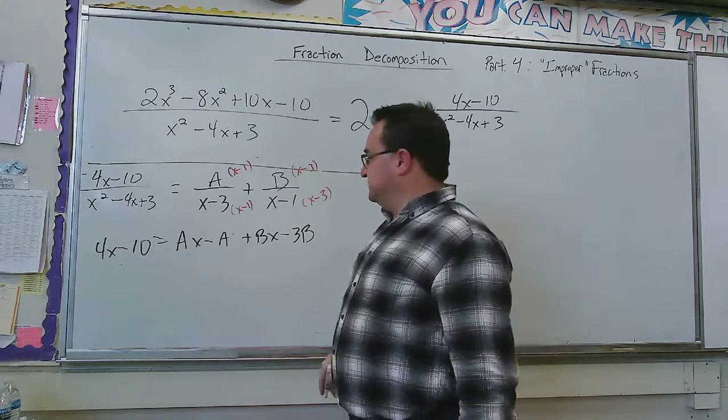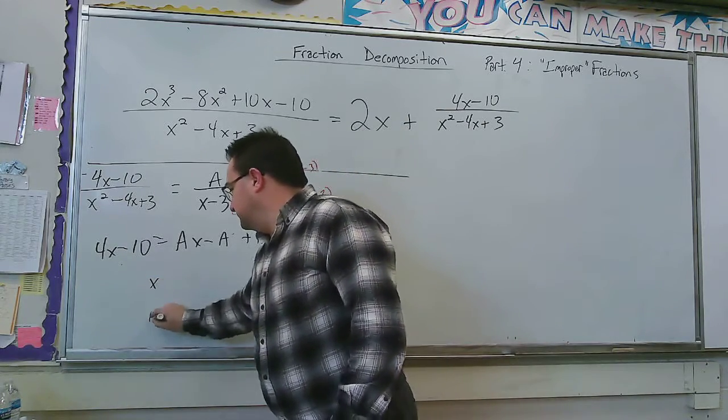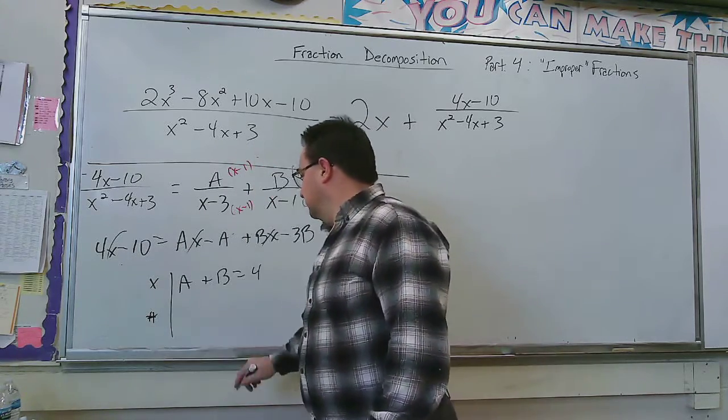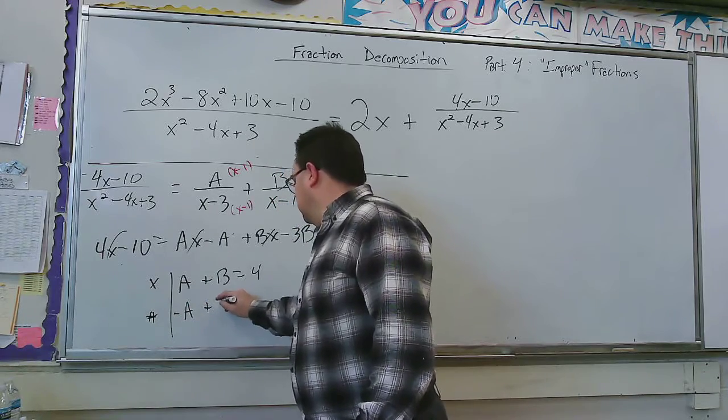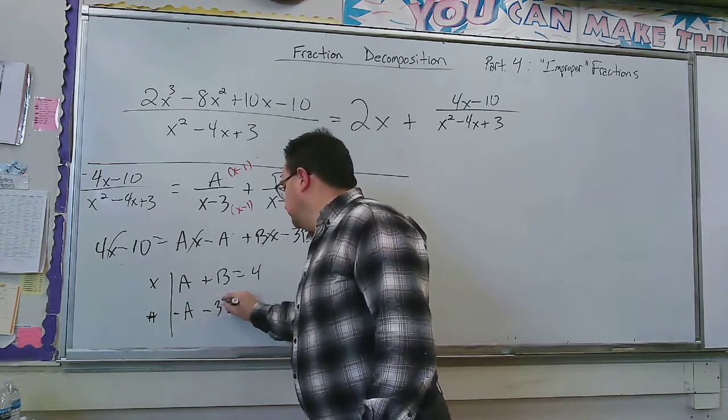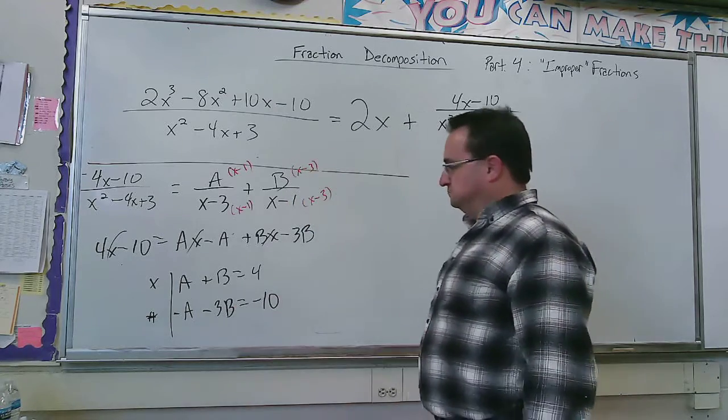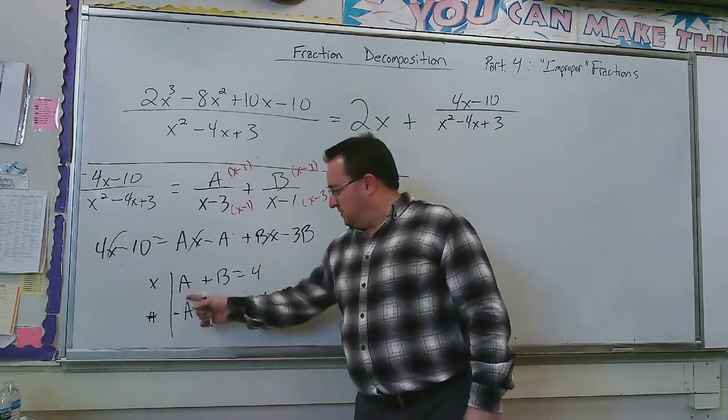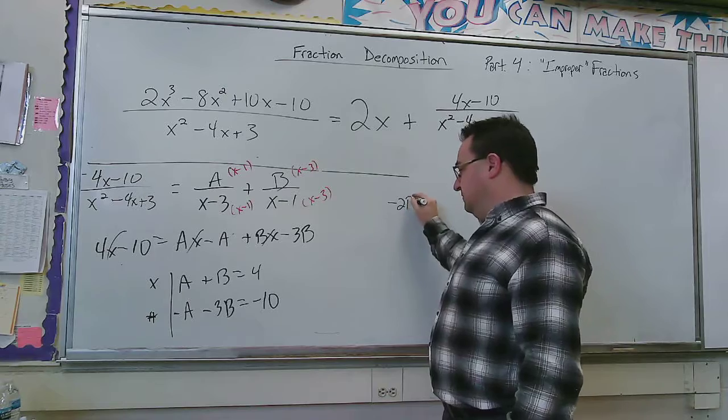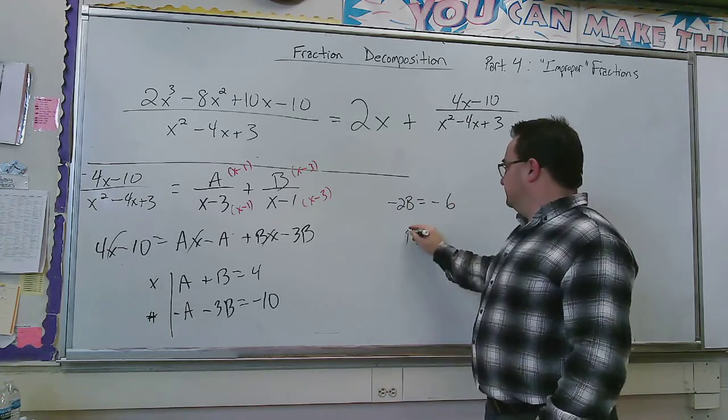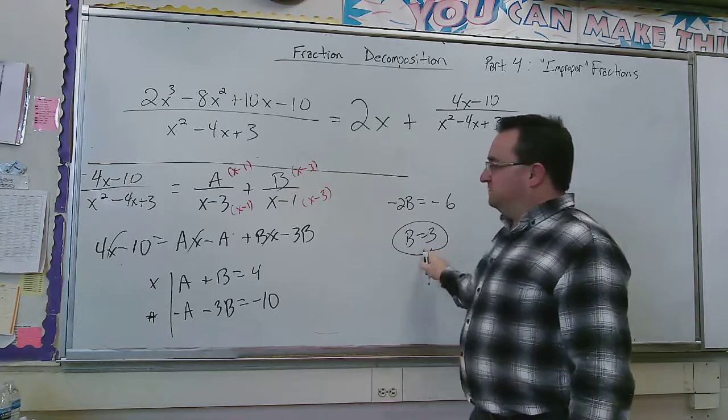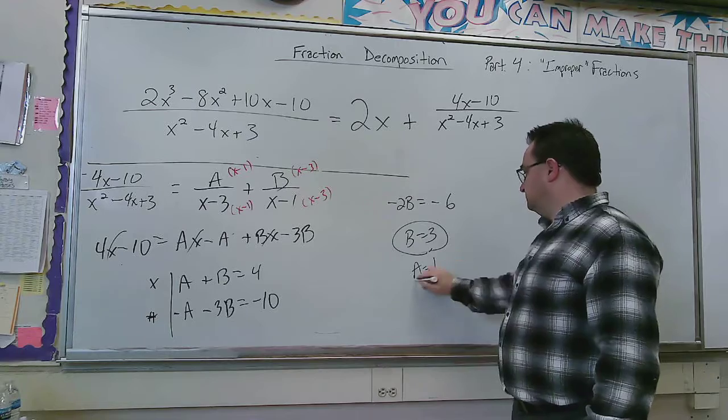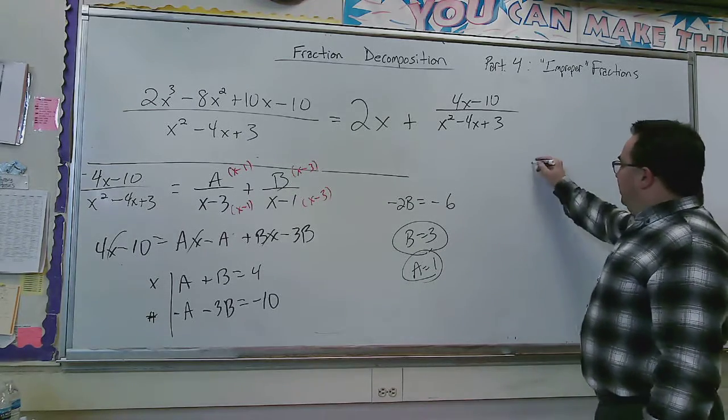And when I set up my system of equations I would have my x's and my constants. So I have a plus b equals 4 and minus a plus, sorry, minus 3b equals minus 10. And that is a super easy system to solve. I can just add these the way they are and I'm going to get minus 2b equals minus 6. So b equals 3. And if b equals 3 then a must be 1.